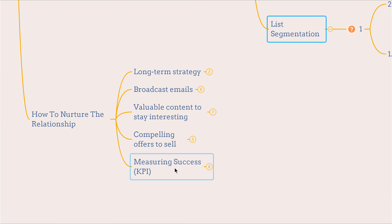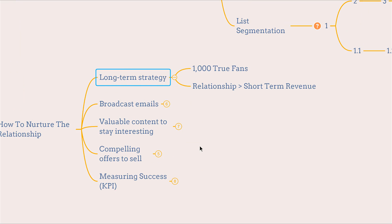The next component is how to nurture the relationship. You have to focus on building a long-term relationship. Tim Ferriss, who wrote The Four-Hour Workweek, has a chapter that focuses on building 1,000 true fans, because if you successfully build 1,000 true fans, those fans will refer others, and that will go on and on — you will have an exponential effect for your company and your services.